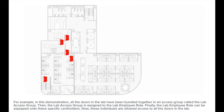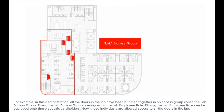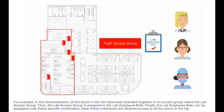For example, in this demonstration, all the doors in the lab have been bundled together into an access group called the Lab Access Group. The Lab Access Group is then assigned to the Lab Employee Role. Finally, the Lab Employee Role can be assigned to specific cardholders, meaning these individuals are allowed access to all the doors in the lab.